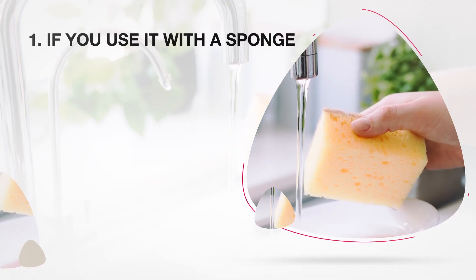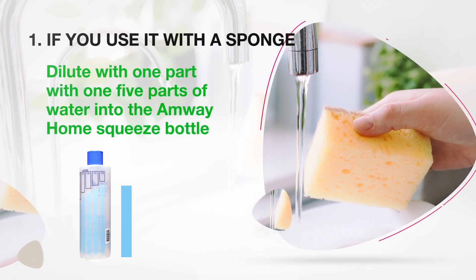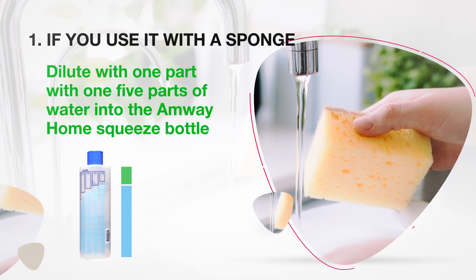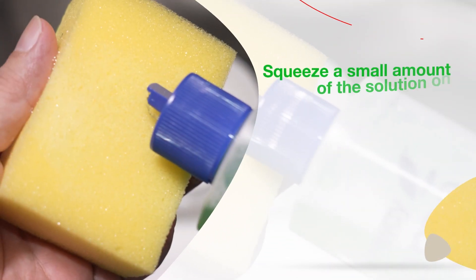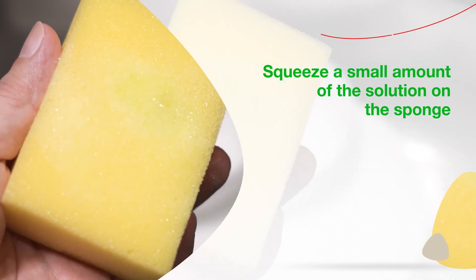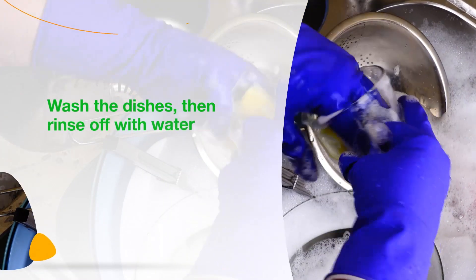If you use it with a sponge, dilute one part with 1 to 5 parts of water into the Amway Home squeeze bottle. Squeeze a small amount of the solution on the sponge. Wash the dishes, then rinse off with water.